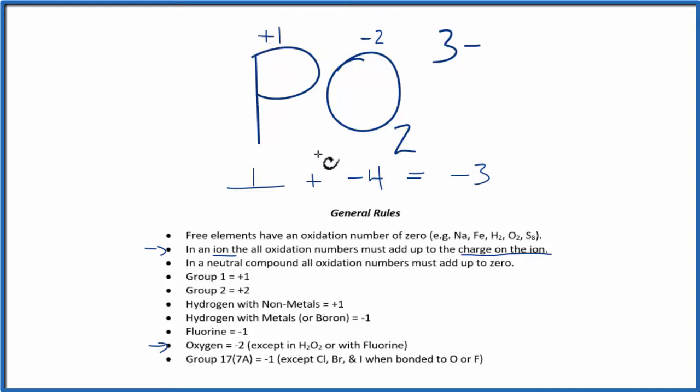All of these numbers here on the oxygen and the phosphorus will add up to this three minus here, the charge on the ion. So to recap, we found the oxidation numbers for the elements we knew, the oxygens, then we used this rule that in an ion all the oxidation numbers add up to the charge on the ion, and we used that to find the phosphorus.